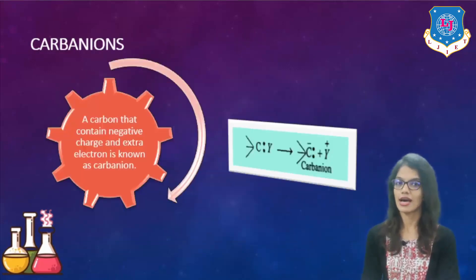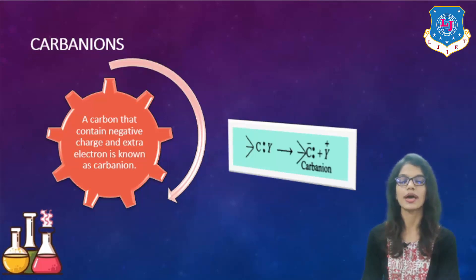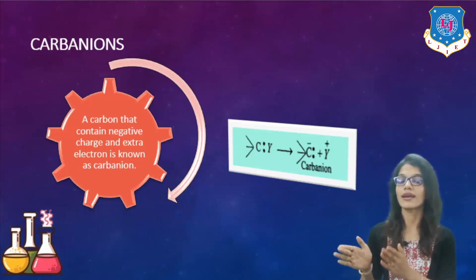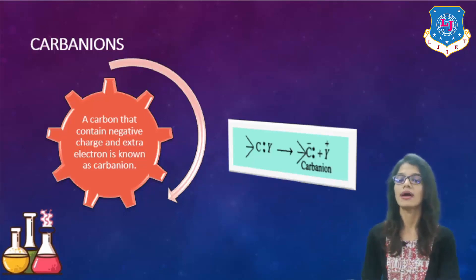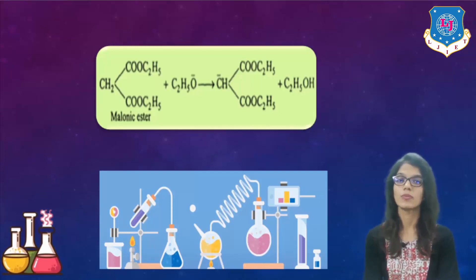Next we have carbanions. The word carbanion is divided into two parts: carbon and anion. A carbon which contains a negative charge is known as a carbanion. As you can see in the image, C minus plus Y plus. When a less electronegative atom combines with carbon, it doesn't take electrons with itself, so the electron remains with the carbon, giving it a negative state — and it becomes a carbanion. For example, when malonic ester reacts with C2H5O minus, one hydrogen is removed but the carbon acquires a negative charge and becomes a carbanion, while that hydrogen combines with C2H5O minus and becomes ethanol.